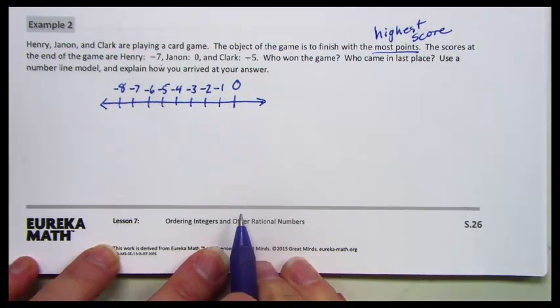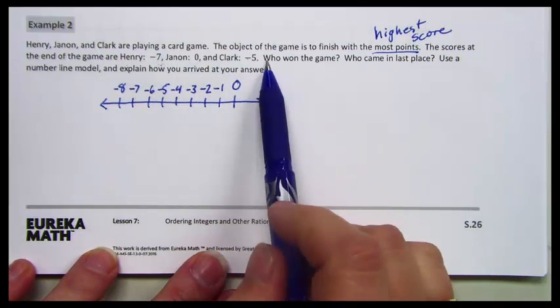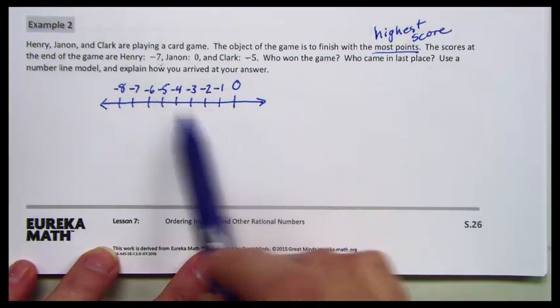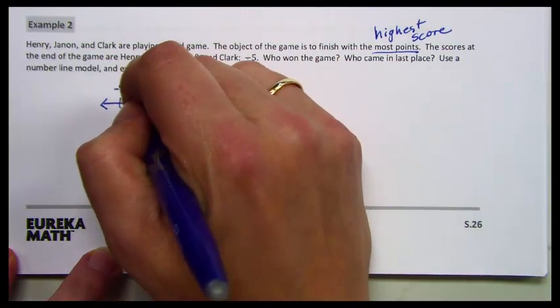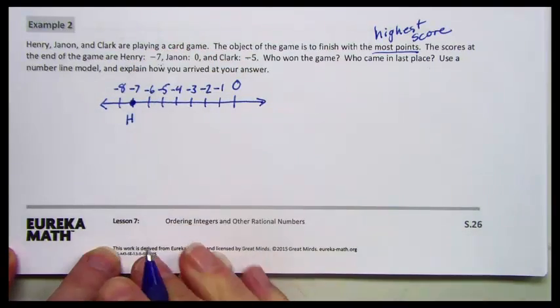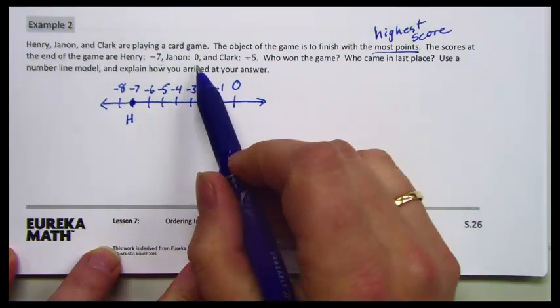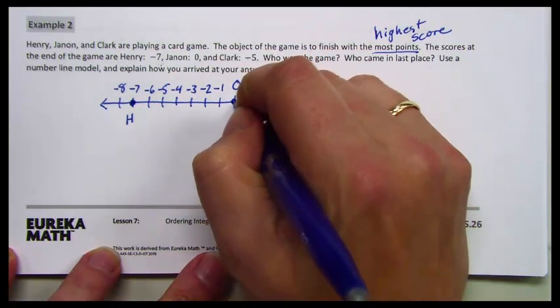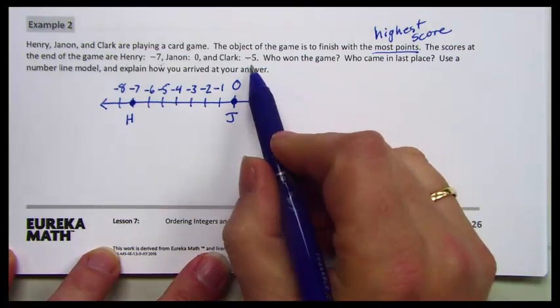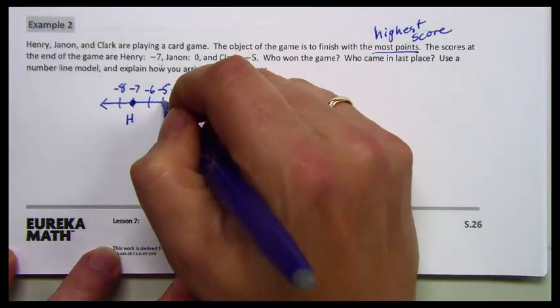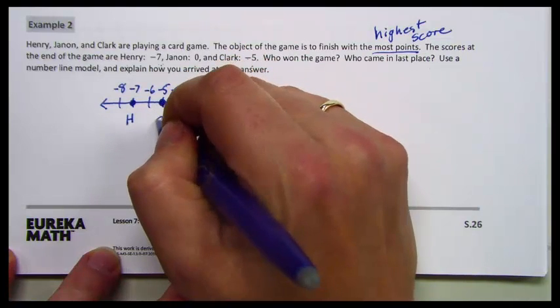My next step is to place all three of the scores on my number line. I know that Henry is negative 7, so I'm going to put a dot here and an H for Henry. I know that Janan had 0, so I'm going to put a dot here and a J for Janan. And Clark had negative 5, so I'll put a dot at negative 5 and a C for Clark.